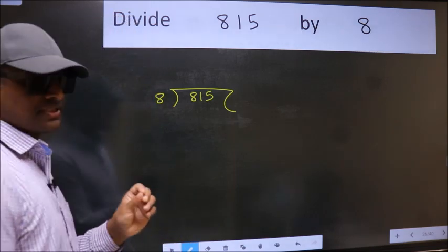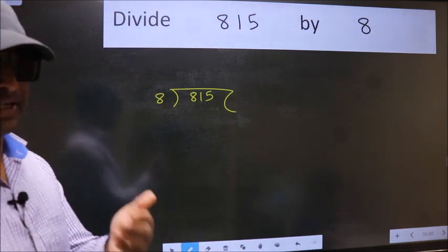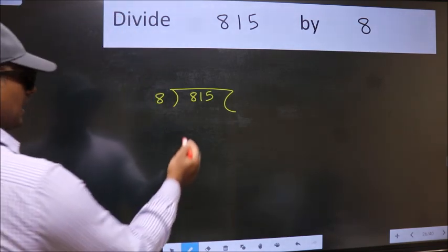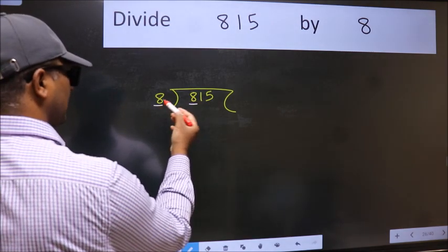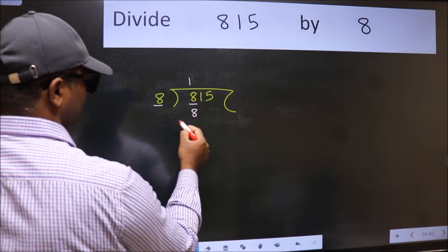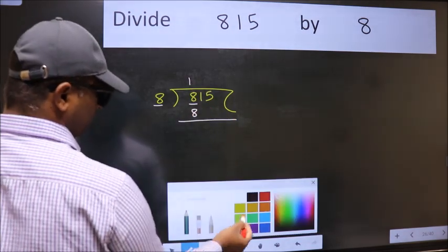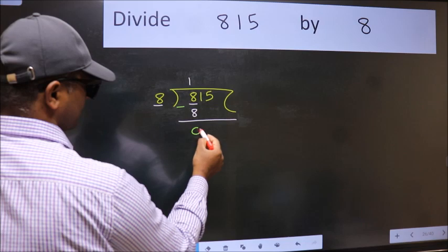This is your step 1. Next, here we have 8 and here 8. When do we get 8 in the 8 table? 8 once is 8. Now, we should subtract. We get 0.